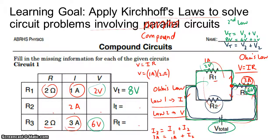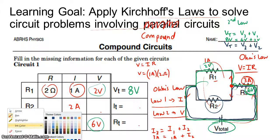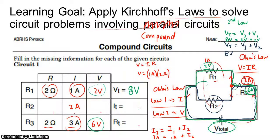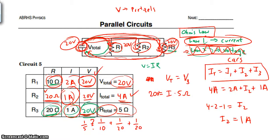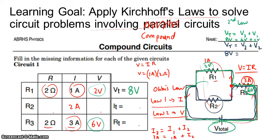So I have 8 volts. Now I can look at my second loop. The total voltage — we just found that's 8 volts. The voltage through R3 is 6 volts, so we can find the voltage through R2: 8 minus 6 gives you 2 volts. So if you look at the parallel branches, this is going to be 2 volts and this is going to be 2 volts as well.